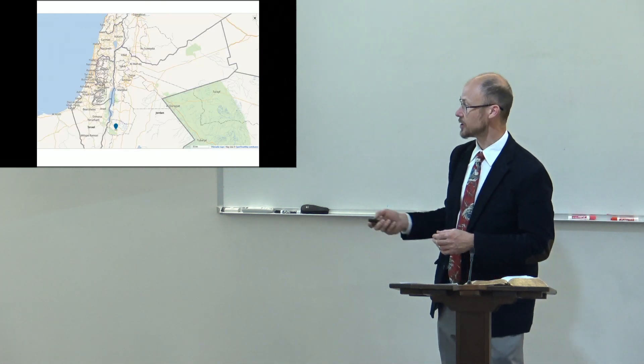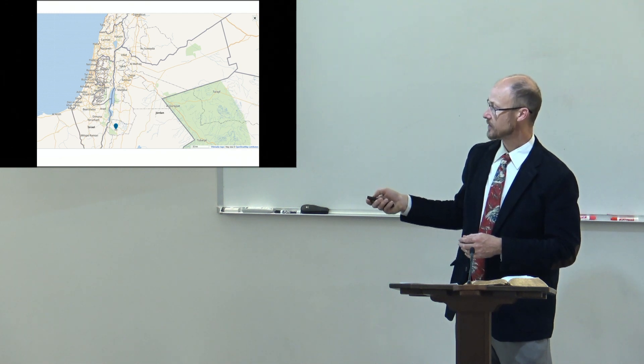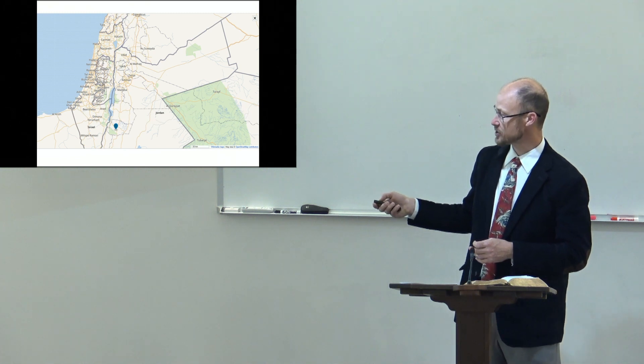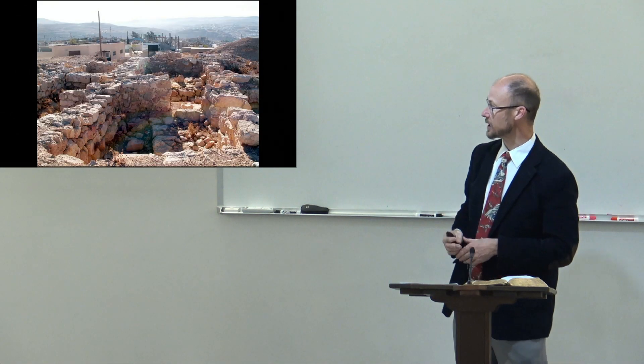That is who Obadiah mostly writes about. Edom, the ancient country, was south. Here's the Dead Sea. The Sea of Galilee. And so you have half of this area is Jordan, and the other is Israel. And Edom composed that latter area. Where you have the blue marker here, that's where this next picture is taken from.